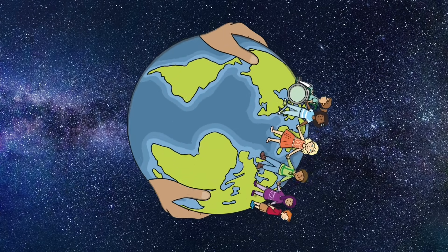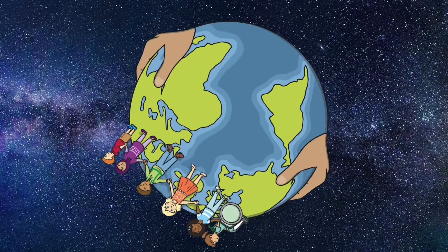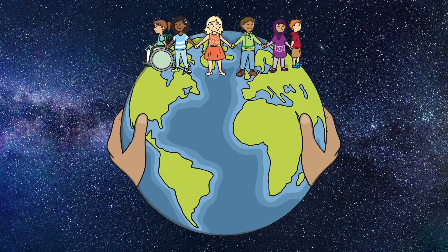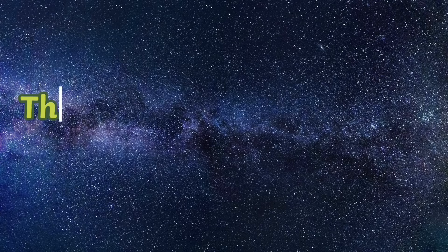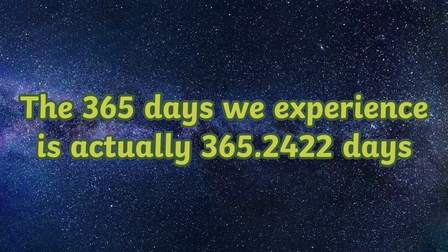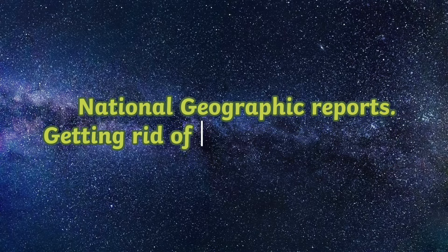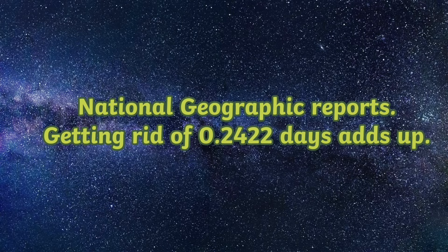Why do we have leap years? The amount of days it takes for Earth to complete a full revolution around the Sun is not a whole number. The 365 days we experience is actually 365.2422 days. National Geographic reports that ignoring the 0.2422 days adds up over time.